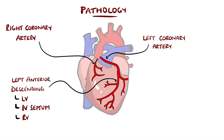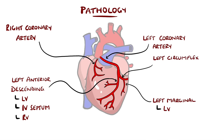There is also the left marginal artery that supplies the left ventricle, and the circumflex artery that supplies the left atrium and part of the left ventricle. The right coronary artery supplies the right atrium, including the SA and AV nodes, and the right ventricle.